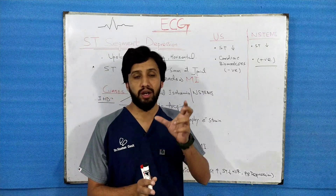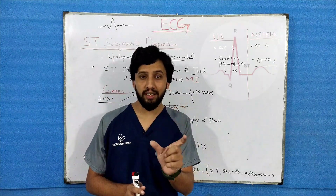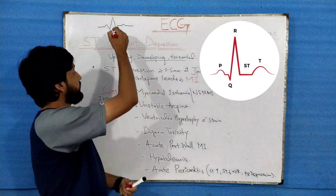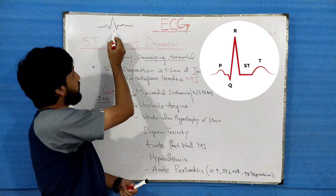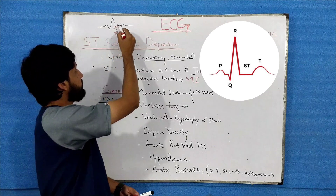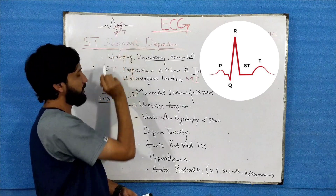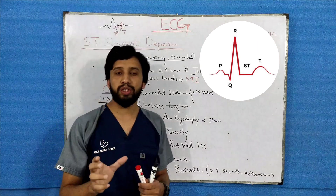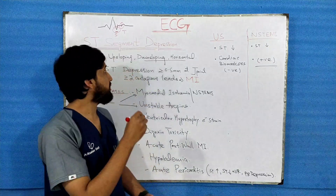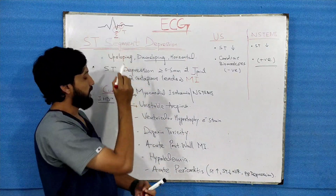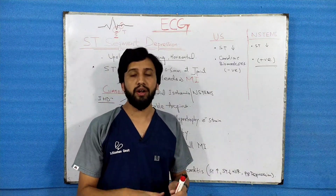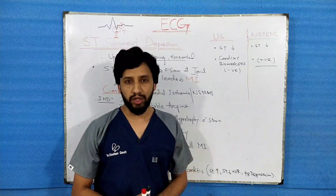The ST segment is a portion of the ECG complex which is a straight isoelectric line. It starts at the end of the S wave and ends at the beginning of the T wave. It is actually the interval between ventricular depolarization and ventricular repolarization.